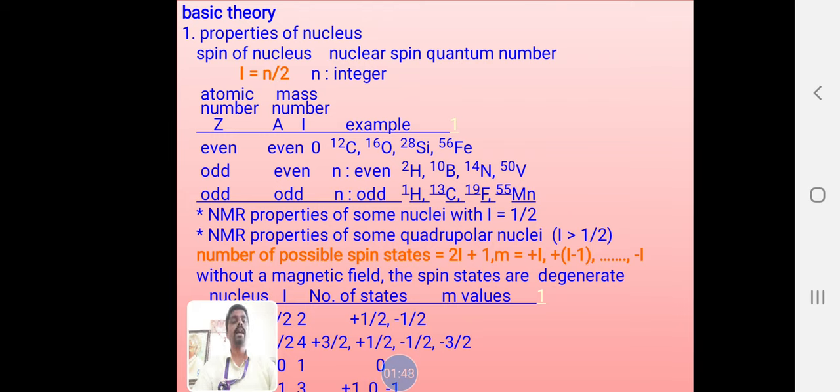The number of possible spin states will vary based on 2I plus 1, M equals plus 1 to minus 1. Without the magnetic field, the spin states are degenerate. We have fractions and can get NMR signals.